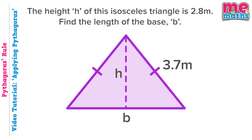Let's have a look at our first example that might not immediately appear to be a Pythagoras question, as it's not a right angled triangle. However it's important to remember that any isosceles triangle can be made into two right angled triangles by splitting it straight down the middle. Let's take one of these new triangles and use it to answer our question.